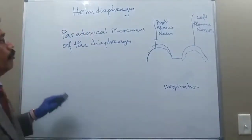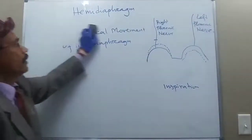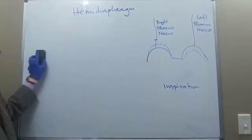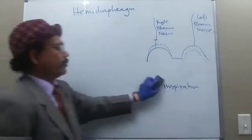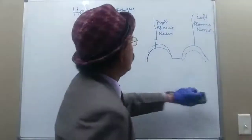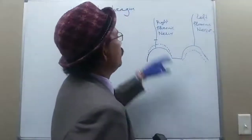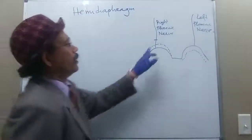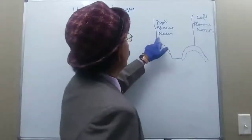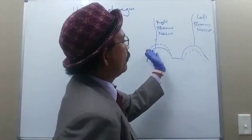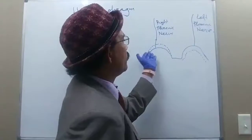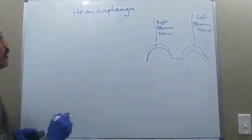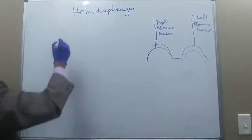This is the paradoxical movement of the diaphragm, and this condition is called hemidiaphragm. Due to any lesion — whether the section is on the right or left phrenic nerve — we will get the same paradoxical features on the corresponding side.